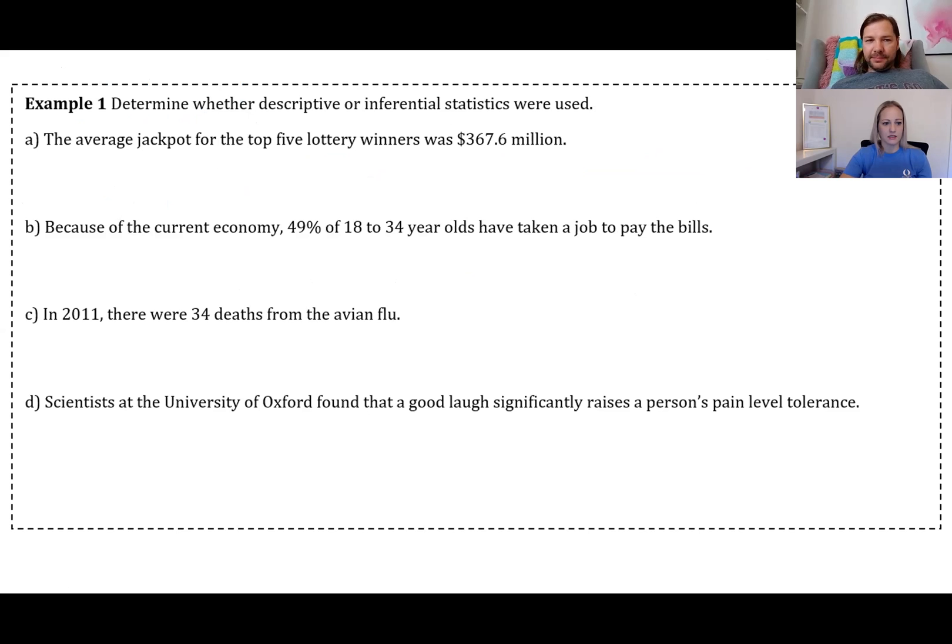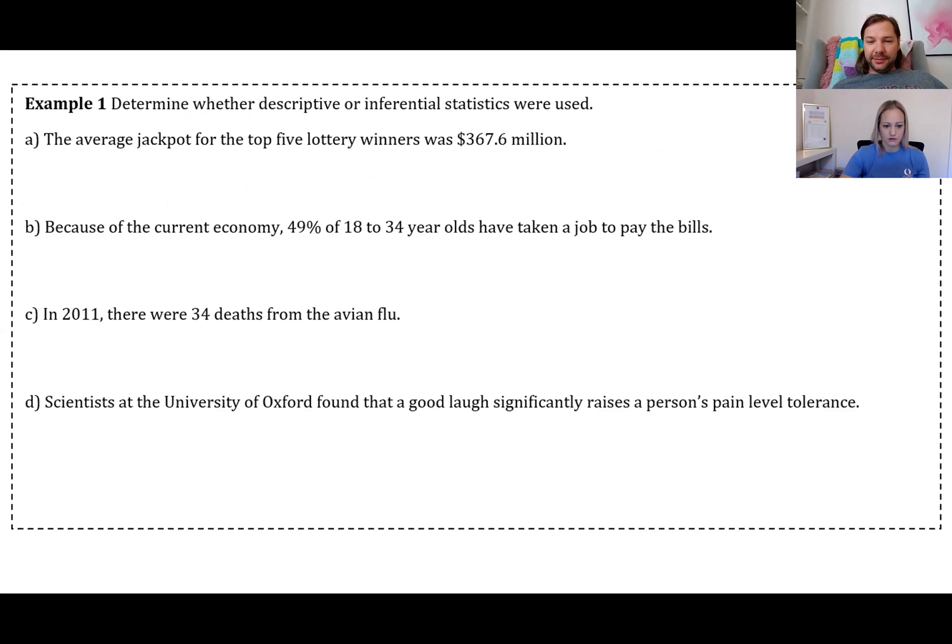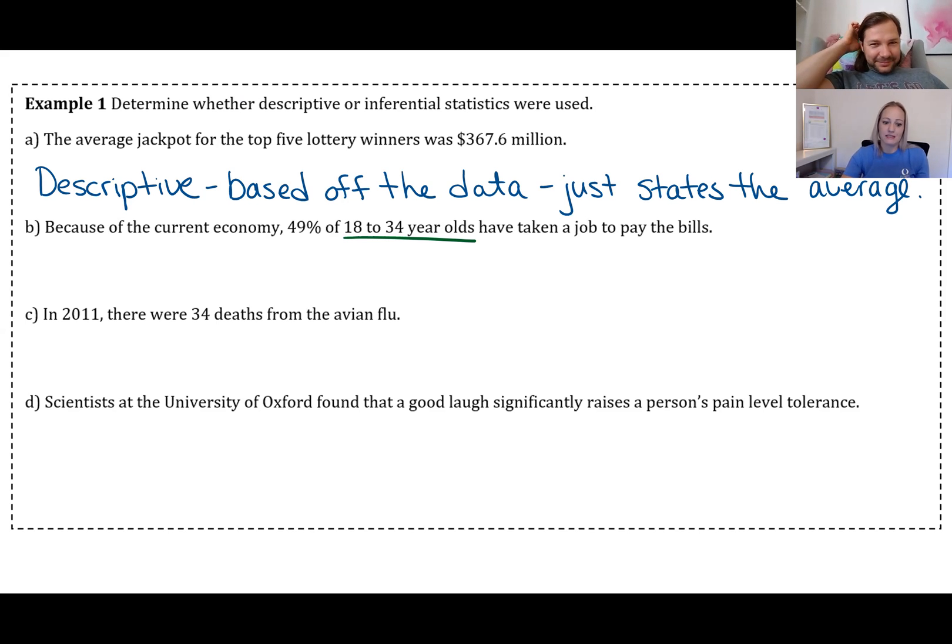We're going to do an example now where we kind of practice calling the difference. The first one is the average jackpot for the top five lottery winners was $367.6 million. So would that be descriptive or inferential? It's descriptive, and that's because we're just describing what happened, the top five lottery winners. It's based directly off the data. You could easily figure out what the top five lottery winners were and then just find the average of that.